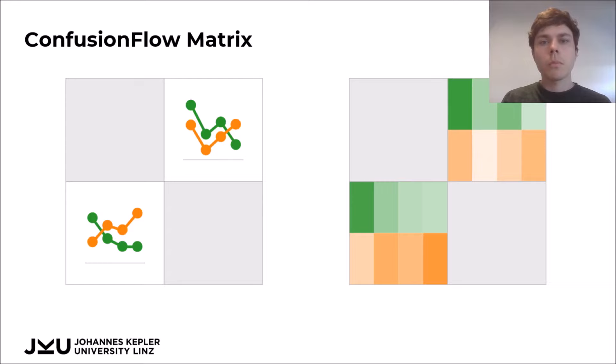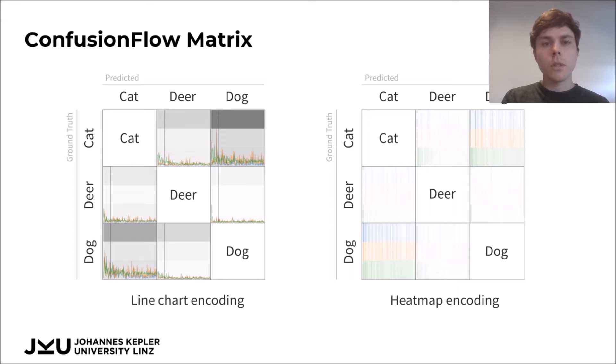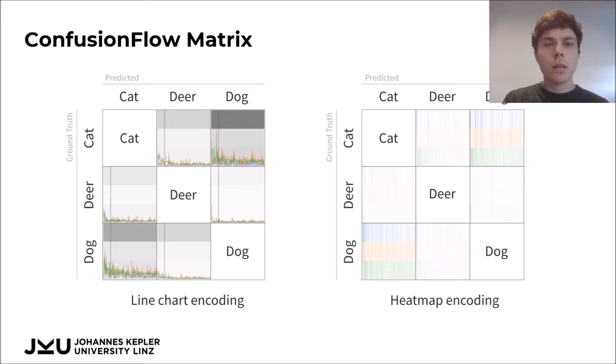Here you can see how the actual implementation of the Confusion Flow matrix with its two different encoding options looks for real data. On the left you can see the line chart encoding and on the right the encoding that uses stacked heat maps. If the user selects a single epoch, the line chart encoding also shows the confusion values for that specific epoch as a background heat map — these are the gray bars that you see on the left.